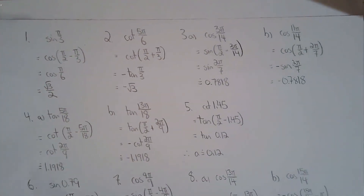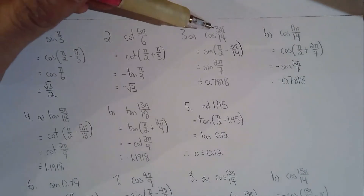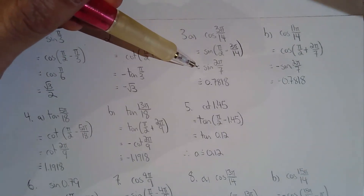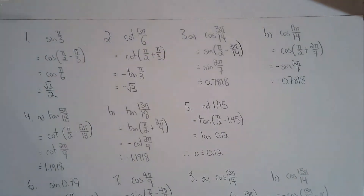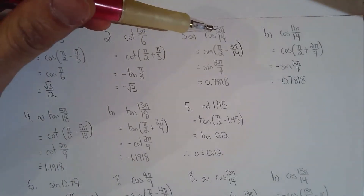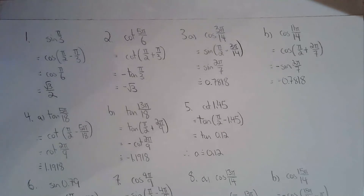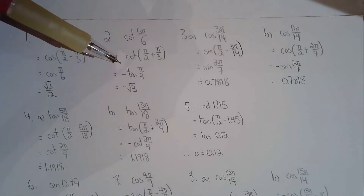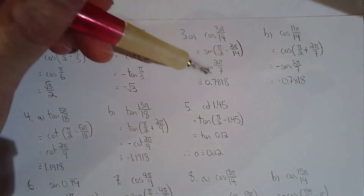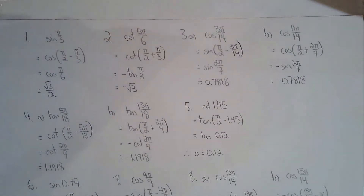For 3a, given sine(2π/7), find cos(3π/14). Since 3π/14 is in the first quadrant, simply find the complementary angle and you're done. The answer is approximately 0.7818.